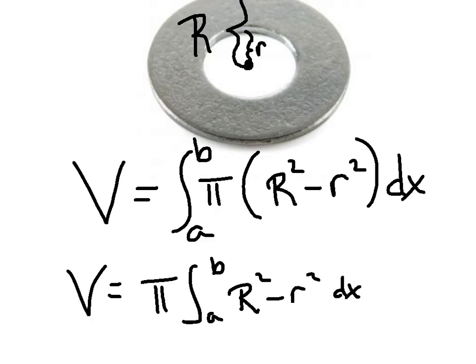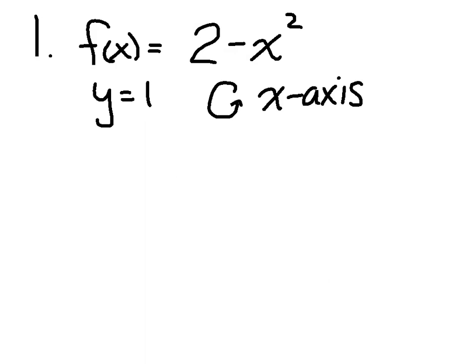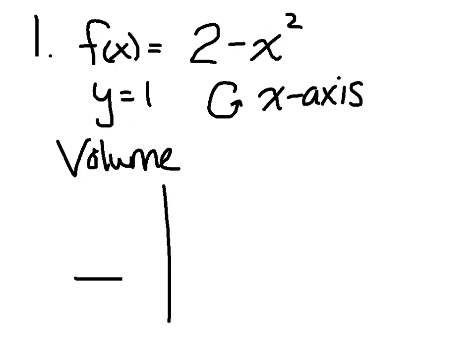Let's go ahead and dive in. I'll have some great visuals in class to go along with this, and I'll have some 3D objects I can show you. Example number one: f(x) equals 2 minus x squared, y equals 1, and we're going to rotate this around the x-axis. Our goal is to find the volume generated by this figure. Just like before, we want to make sure we have a nice sketch of what's taking place.